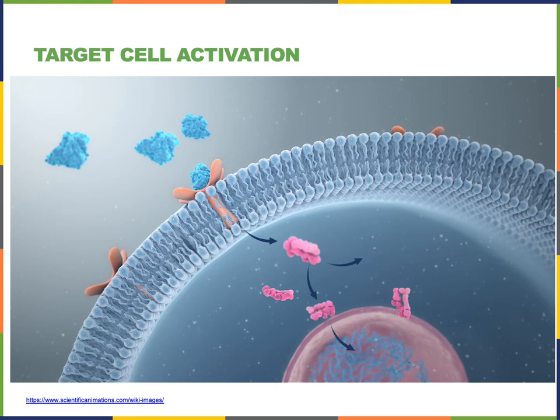Either way, the receptor is specific for the hormone, and that allows a hormone to influence the activity of that cell — the physiology of the cell will be regulated by that hormone. Now let's look at a couple of examples of hormones and how they influence target organs and target cells.